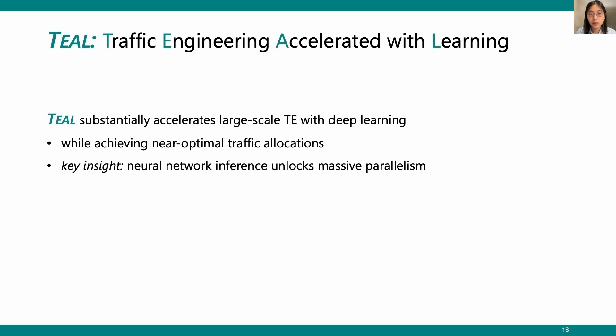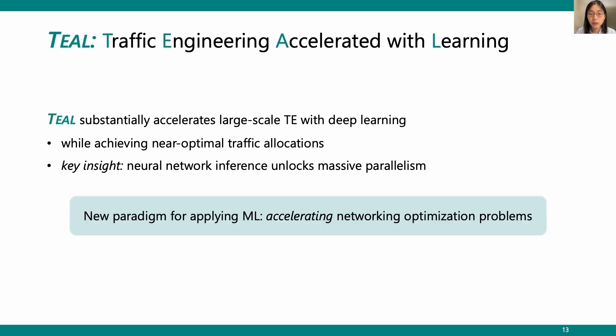In conclusion, TEAL substantially accelerates large-scale traffic engineering with deep learning while achieving near-optimal traffic allocations. Our key insight is that neural network inference unlocks massive parallelism. We believe TEAL has opened the door to a new paradigm of applying ML in networking — accelerating network problems in addition to its conventional uses. Thank you.